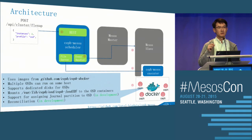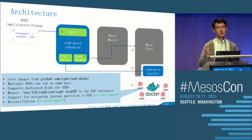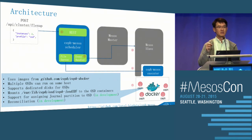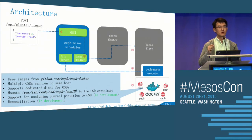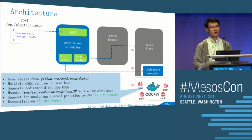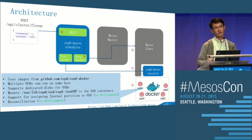Even if the container crashed, the Mesos scheduler can still recover that container on the exact same node. As long as the data is there, everything can come back. That's something the current Ceph Deployer cannot do.